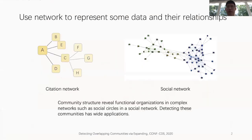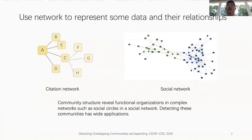Using a complex network to express data and the relationships between them is a simple but effective way, and analyzing a complex network can help us thoroughly understand the network system. For example, scientists and their co-writing relationships can form a collaboration network. The number of connections inside communities is far larger than that between communities. Thus, community structures reveal functional organizations in complex networks, such as social circles in a social network.